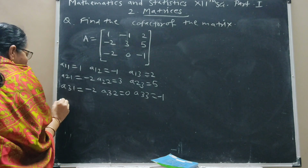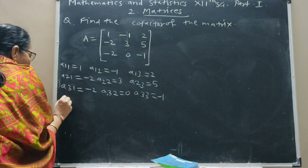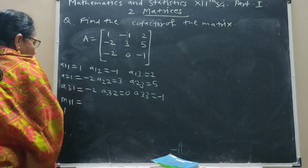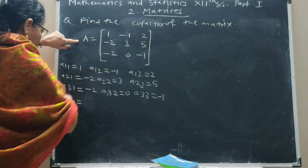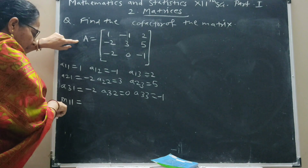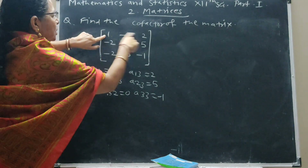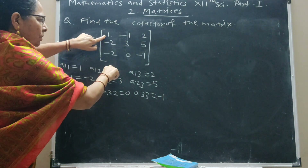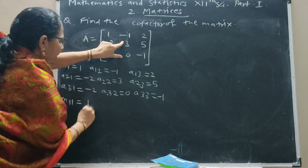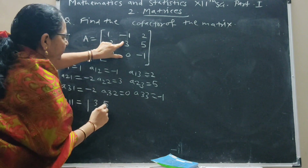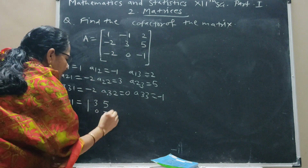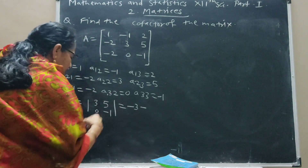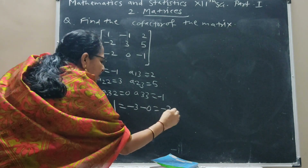Then M11 is the minor obtained by deleting the first row and first column. We take the determinant of the remaining elements: 3, 5; 0, minus 1. This gives minus 3 minus 0, which equals minus 3.